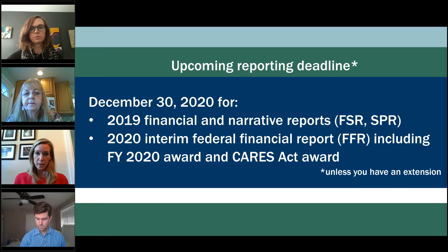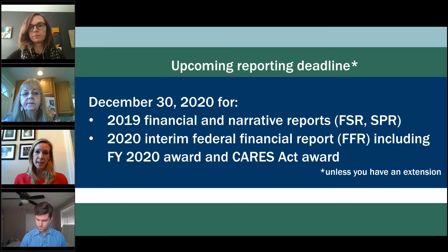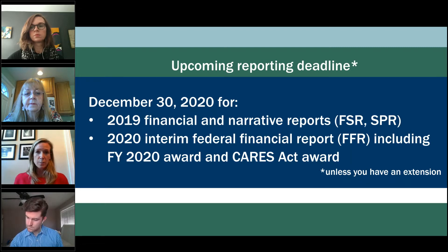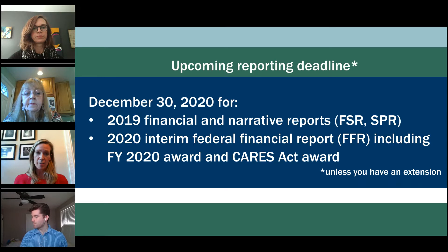If you cannot meet your reporting deadline, whether December 30th or a later extension date, we really need you to let us know before that deadline that you're going to need a reporting extension. We can make some edits on the back end of our systems so you don't get automatic alerts that you are suddenly delinquent. Since it's an official communication with IMLS, ideally it would come through the eGMS Reach system as a message. But if you send us an email, we will make it happen.